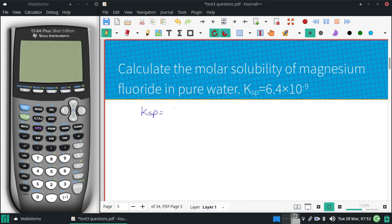Ksp of magnesium fluoride. Magnesium's a positive 2, fluoride's a negative 1, so I'll need 2 of those.